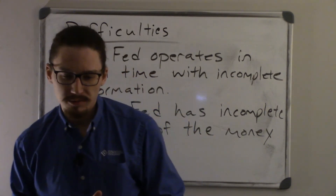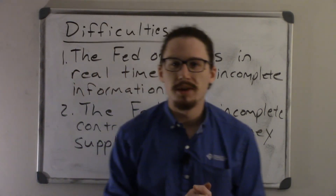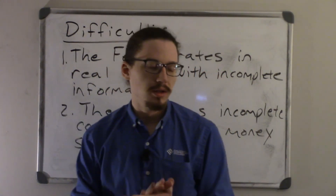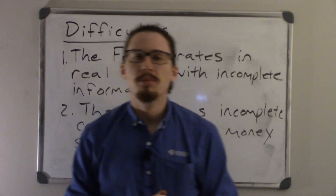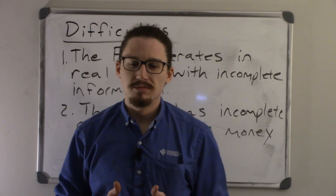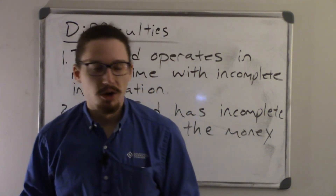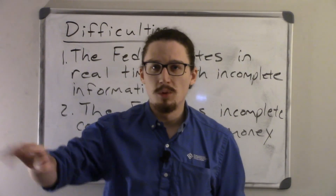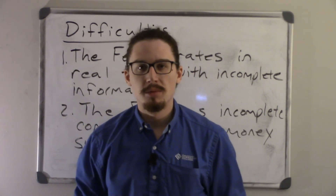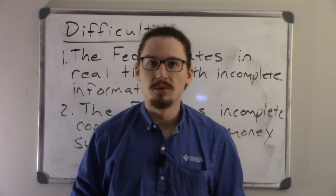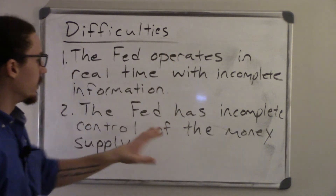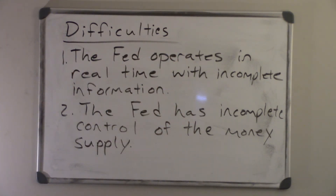I've actually heard a banker from the Federal Reserve say that the Fed is a hatchet and the federal government is a scalpel. We're going to talk more about the federal government and fiscal policy — it can be a lot more detailed — but with monetary policy, you're just using a blunt instrument. We're just trying to get it close, because these things make it very difficult to precisely increase or decrease aggregate demand as the situation requires.